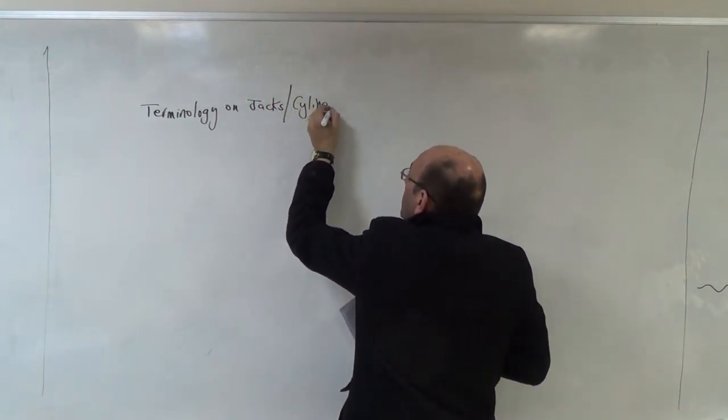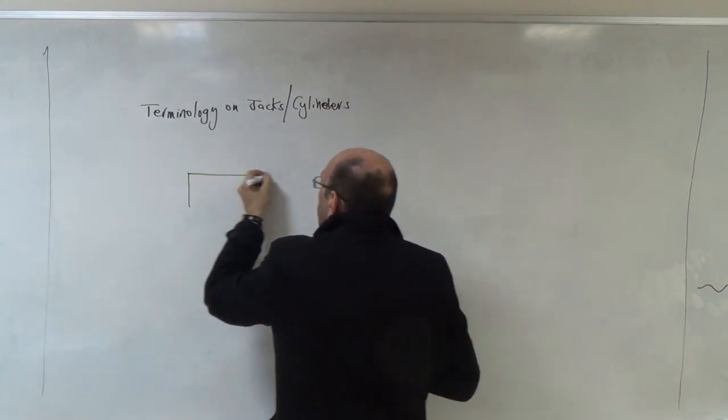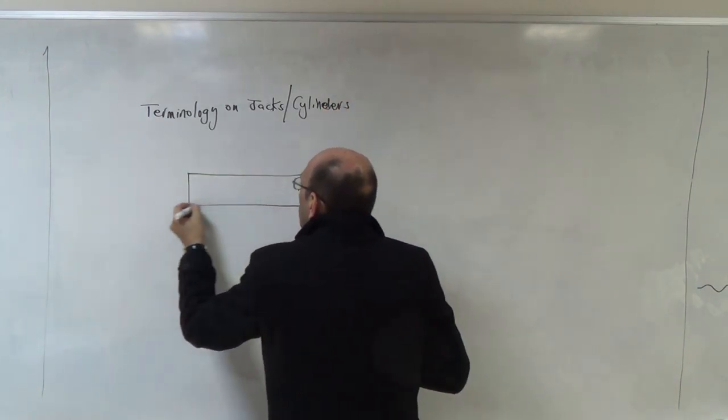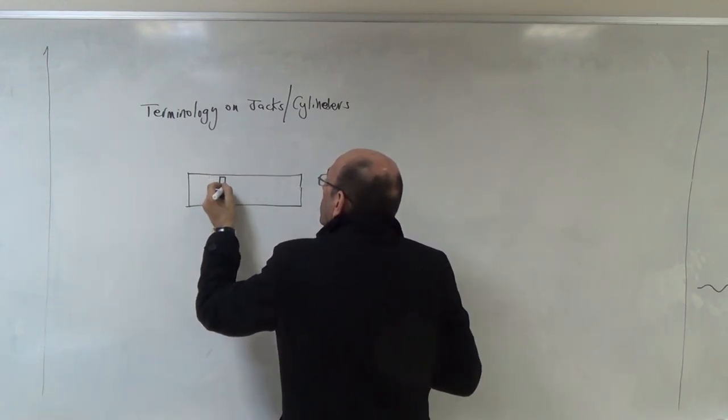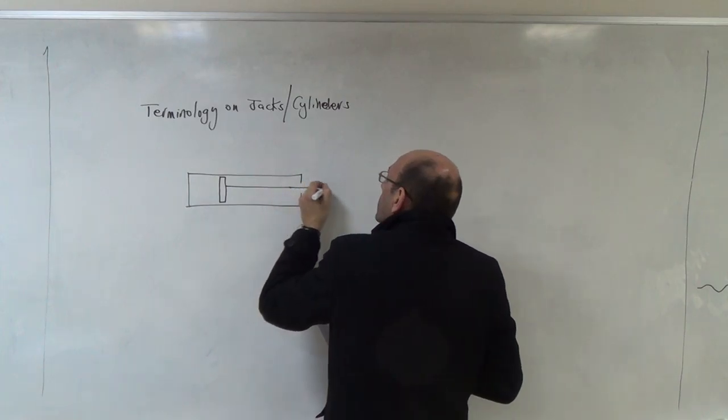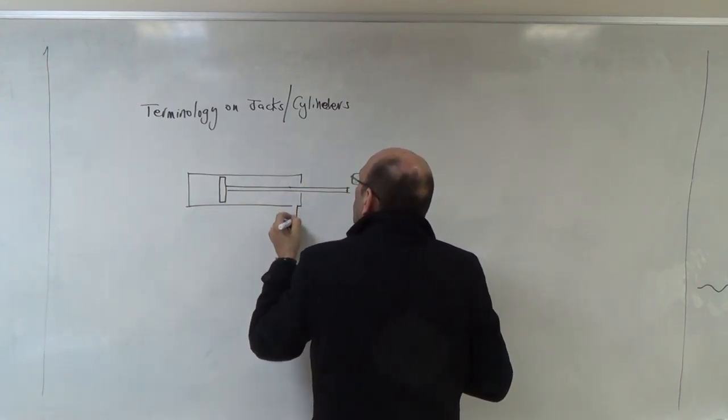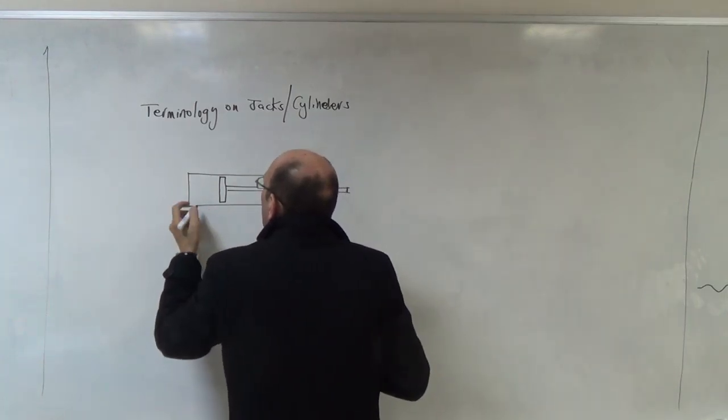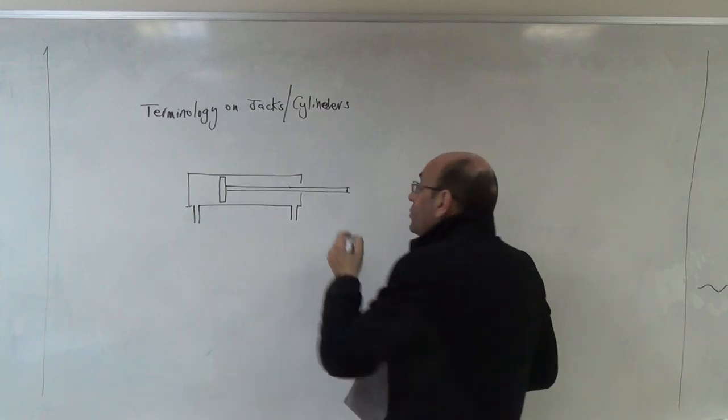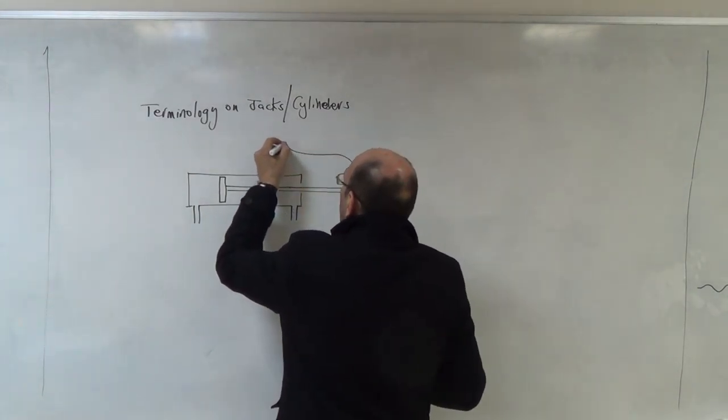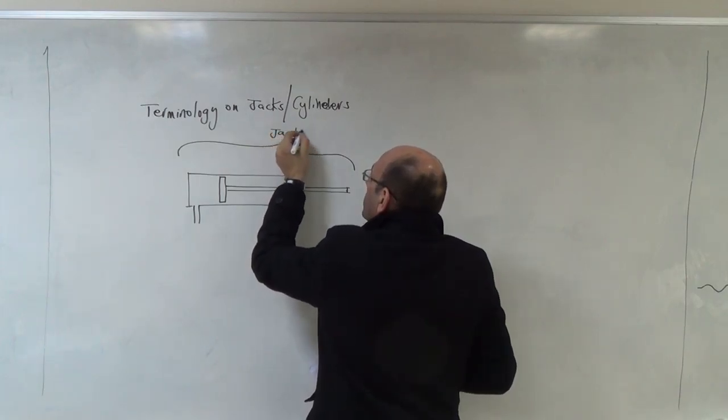On jacks and cylinders. Here is the jack, here is the rod. We are going to go through the components. This is what we call the jack. Each of these parts, this is the one we call jack. This one is jack.